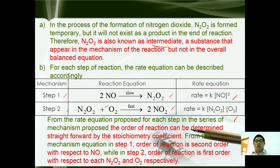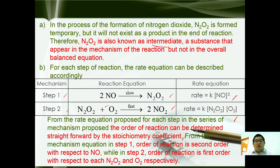For the rate equation proposed for each step in a series of mechanisms, the order of reaction can be determined straightforwardly from the stoichiometric coefficients. So from the mechanism equation in step one, the order of reaction is second order with respect to NO. While in step two, the order of reaction is first order with respect to N₂O₂ and also O₂.